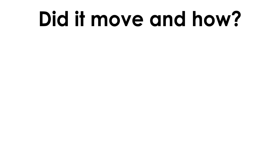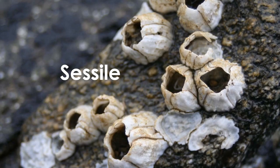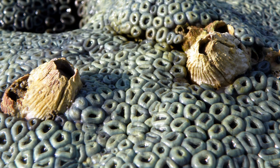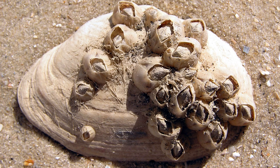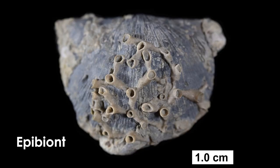Beyond where a fossilized organism spent its life, paleontologists want to know if it could move. When an organism cannot move because it is fixed in one place, we say that it is sessile. Examples of sessile animals include barnacles, sponges, corals, bryozoans, and various groups of echinoderms. Usually these organisms are immobile because they are attached to hard surfaces like rocks on the seafloor, though they may also be attached to shells of other organisms — an organism that attaches itself to another is called an epibiont.